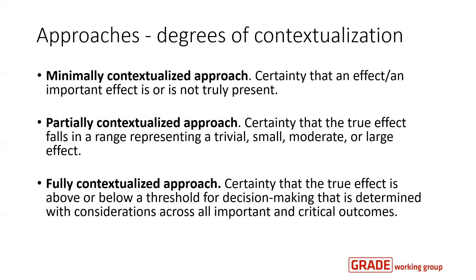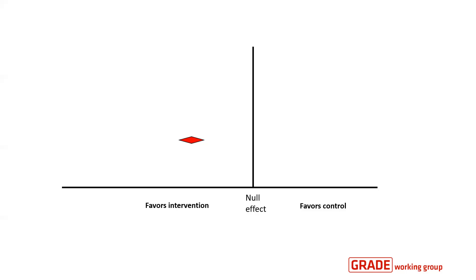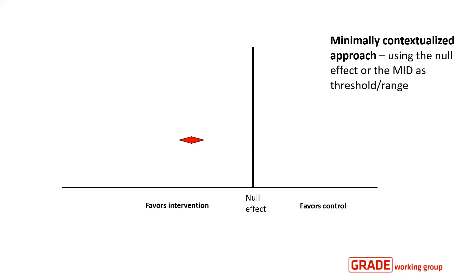All thresholds and ranges, besides the null effect threshold, should be set using absolute effects. To illustrate these approaches, in the middle of the figure is the null effect threshold. To the left are effects that favor the intervention, and to the right, effects that favor the control. In red, we illustrate a pooled estimate. Using the minimally contextualized approach with the no-effect threshold, we would rate our certainty that we have an effect in this outcome without specifying the magnitude further.